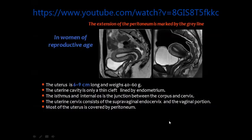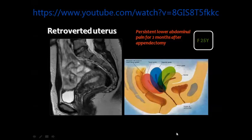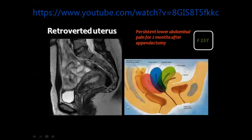The uterus is an extraperitoneal organ covered on its surface by the peritoneal cavity, which also covers the urinary bladder. One issue that colleagues commonly comment on is the position of the uterus. This is the normal position, and sometimes the uterus is anteverted with varying degrees. Here you see a uterus which is totally retroverted, lying in the presacral area — this will not interfere with pregnancy and will not produce any symptoms.